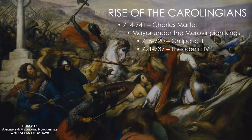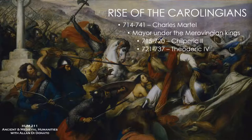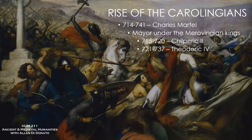Charles Martel had a number of rivals for the office of Mayor of the Palace, but ultimately King Chilperic II allowed him to have his father's position by 718. He then functioned as Mayor of the Palace under the next few Merovingian kings — Chilperic II and then Theuderic IV, who was basically a puppet of Charles Martel. When Theuderic IV died, interestingly, he was not replaced — Charles ruled the last few years as if he were king, without the actual title.